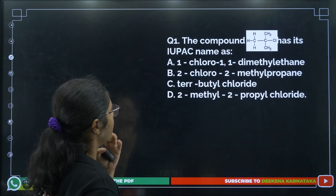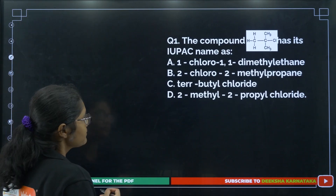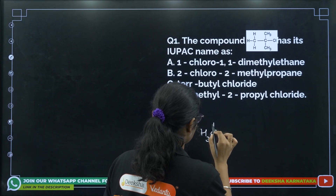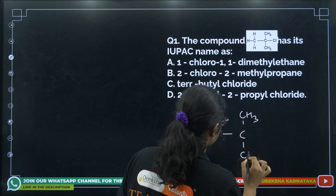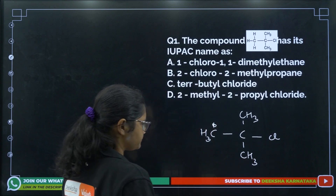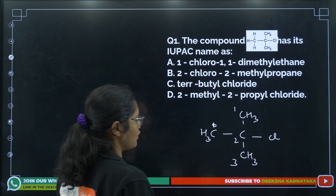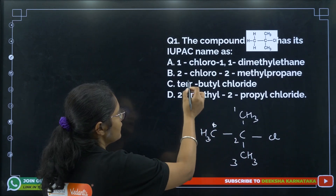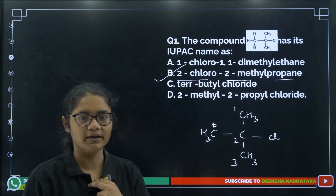Question 1: A compound is given and you have to tell its IUPAC name. The structure is CH3 with CH3, CH3, and Cl. We need to find the parent chain — the longest carbon chain. This gives us 2-chloro-2-methylpropane. So the correct answer is option number B.